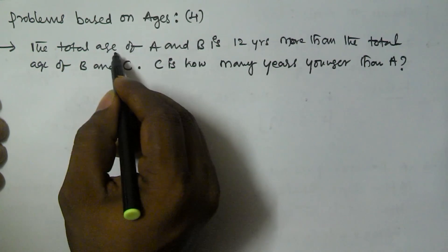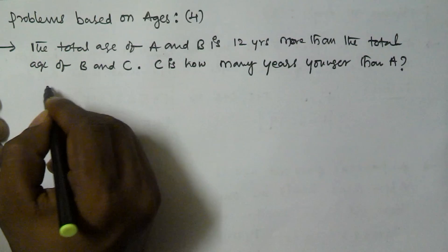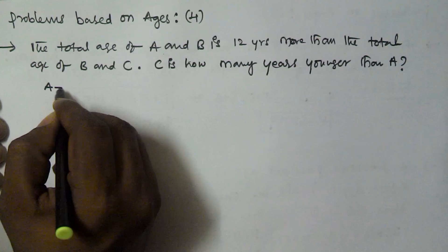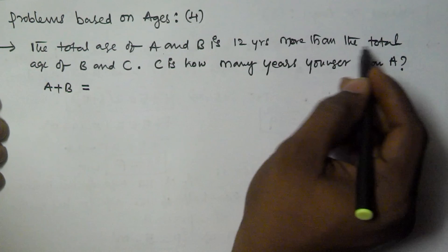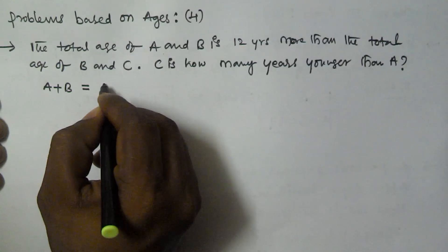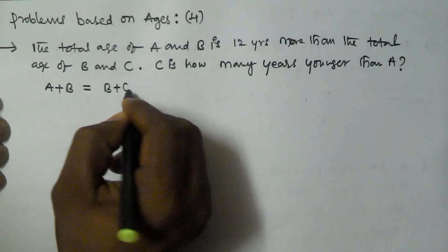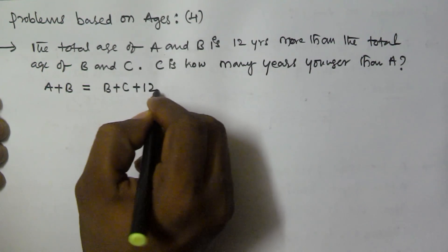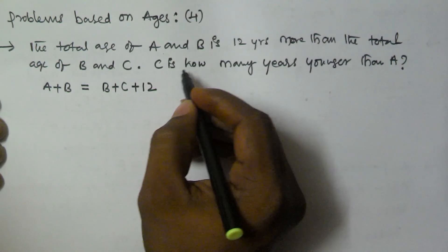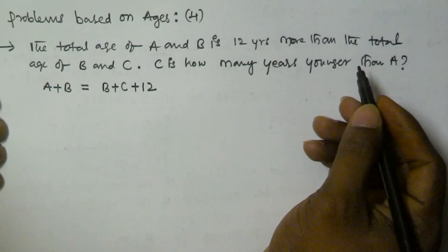If you see, the total age of A and B is A plus B, which is equivalent to 12 years more than the total age of B and C. The total age of B and C is B plus C, and 12 years more means plus 12. Now we have to find C is how many years younger than A.